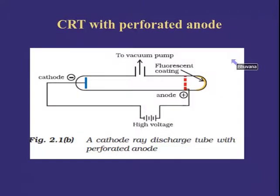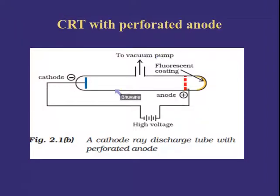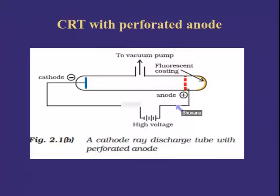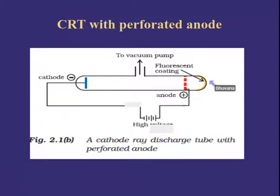Since whatever happens in the cathode ray discharge tube cannot be observed directly, a cathode ray discharge tube with a perforated anode is used. This also consists of the same cathode and anode connected to high voltage. Inside, there is a fluorescent coating — specifically zinc sulfide — placed behind the anode. The flow of cathode rays can be checked by making a hole in the anode and coating the tube behind the anode with zinc sulfide. When cathode rays pass through the anode and strike this zinc sulfide, a bright spot is created.